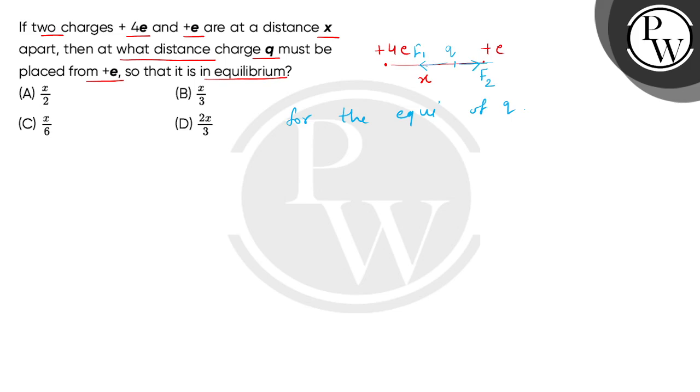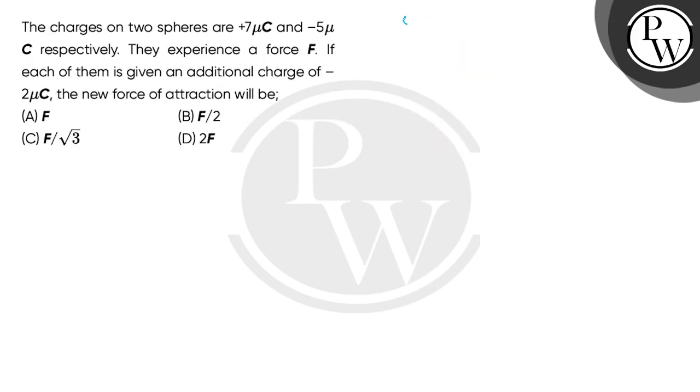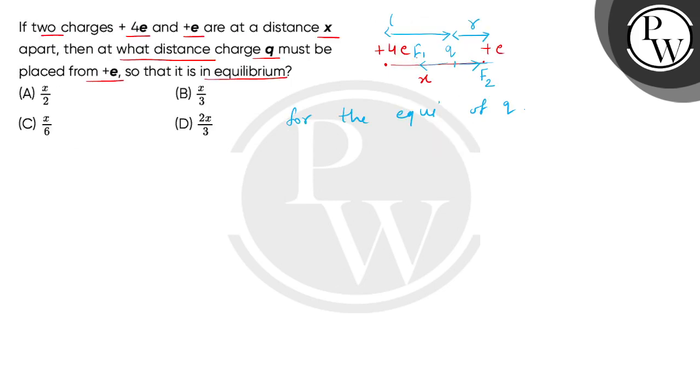So children, if we consider distance q from e, if we consider this distance r, then this distance is x minus r.